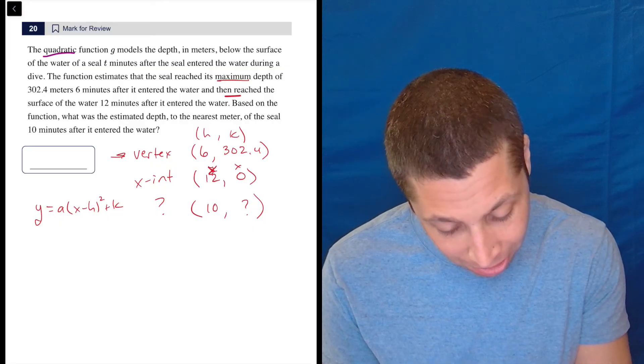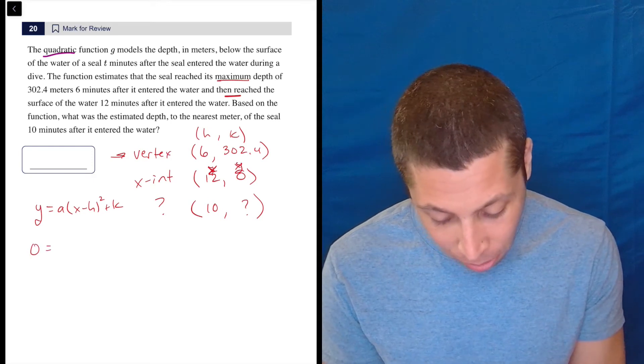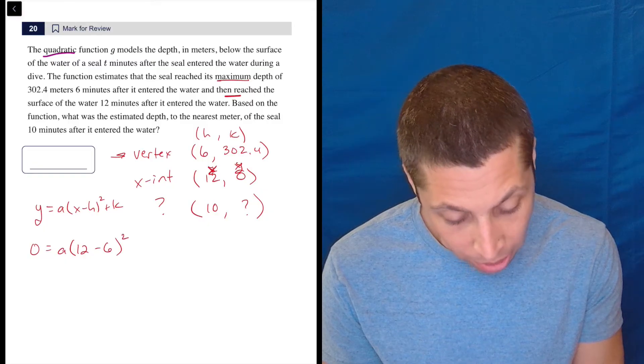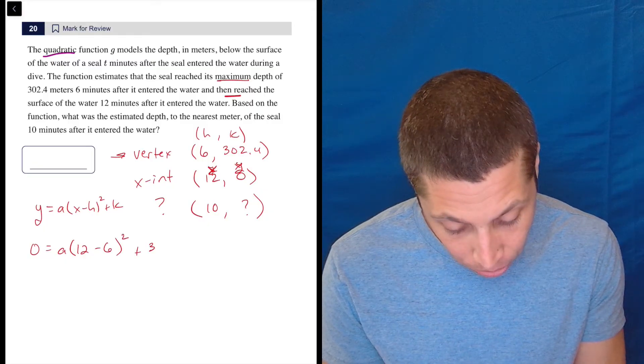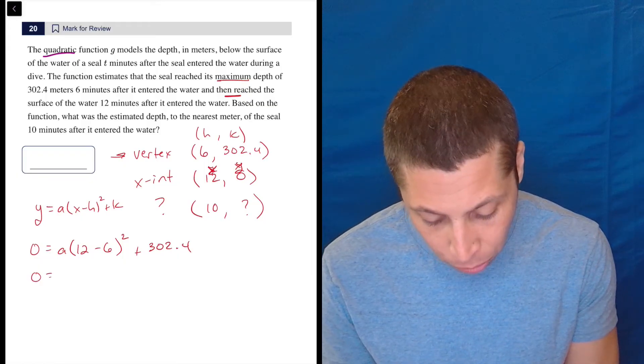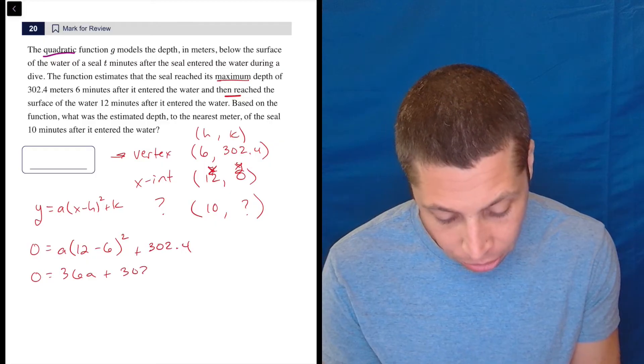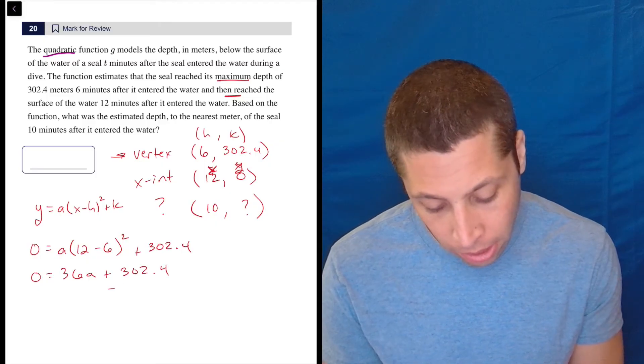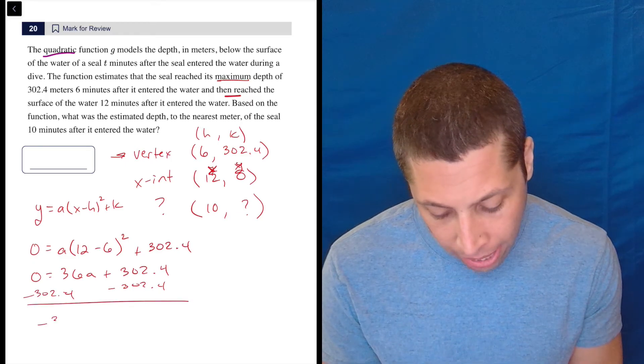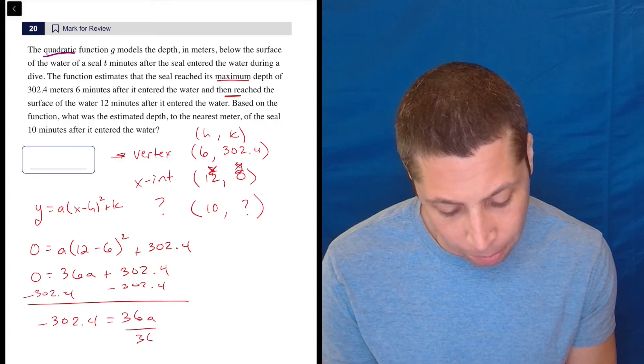So let's do that too. I don't know why I wrote Y first. There you go. Don't confuse X and Y. So we have zero is equal to A, and then X is 12, the H is 6, squared plus 302.4. So zero is equal to 12 minus 6 is 6. 6 squared is 36A plus 302.4. Let's subtract that. Subtract that. And negative 302.4 is equal to 36A divided by 36.